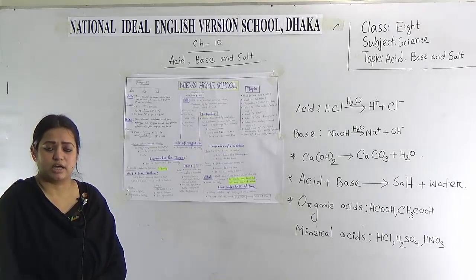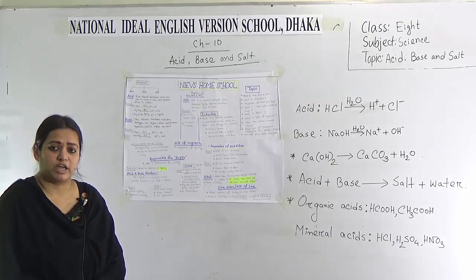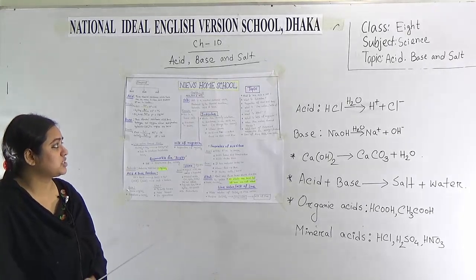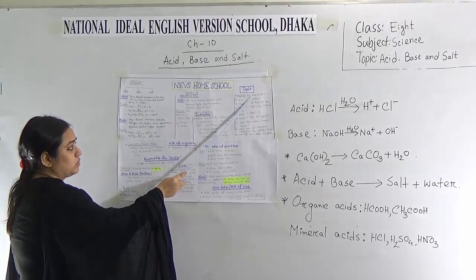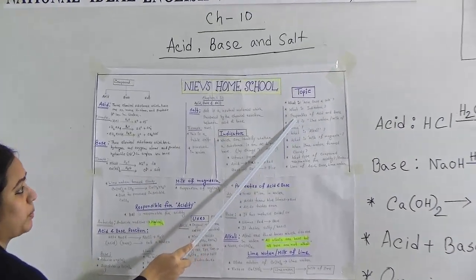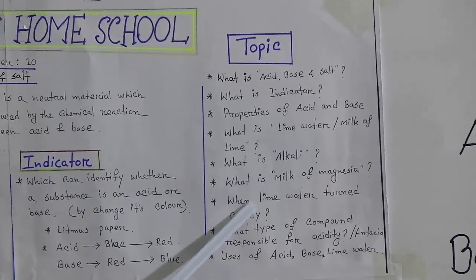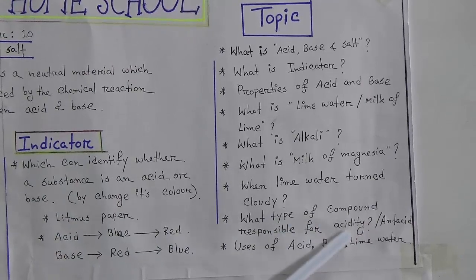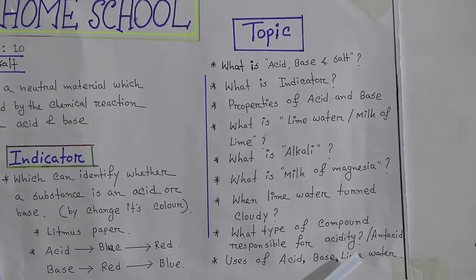Today I am Sharmin Zahan, assistant teacher of science at National Ideal Indian Revolution School. I would like to take a class for Class 8 students based on Chapter 10: Acid, Base and Salt. Today I have selected some important topics from this chapter. The topics are: what is acid, what is base, what is salt, what is indicator, properties of acid and base, what is lime water or milk of lime, what is alkaline, what is milk of magnesium, when lime water turns cloudy, what type of compound is responsible for acidity, what is antacid, and uses of acid, base and lime water.